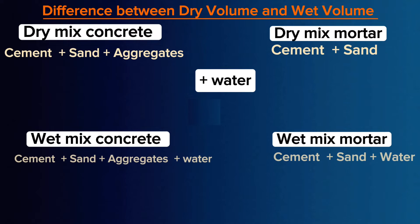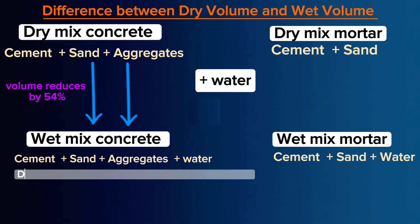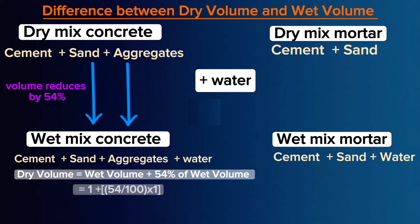When water is applied or added to a dry mix, the volume of the dry mix reduces by 54%, meaning dry volume is equal to wet volume plus 54% of wet volume, which can be simplified as 1.54.